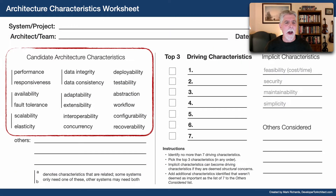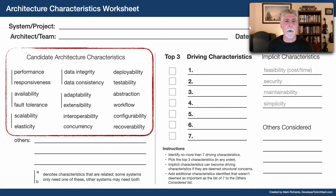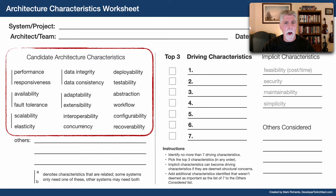Let me discuss some of the sections in the worksheet. The first is on the far left-hand side: the candidate architecture characteristics. I've listed the most common characteristics, but there are also lines where you can write in others that may be important to your particular system. Lines beside some of these indicate that those characteristics are related to one another, and some systems don't need both — for example, whether you truly need availability or fault tolerance, or both.